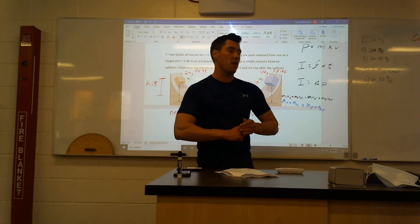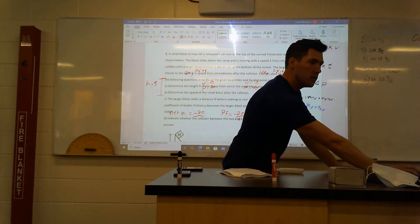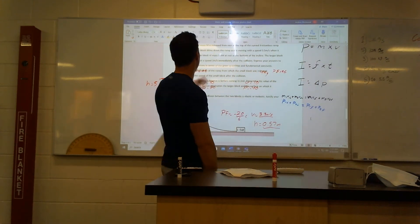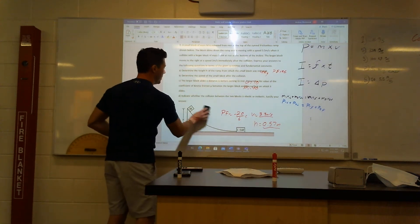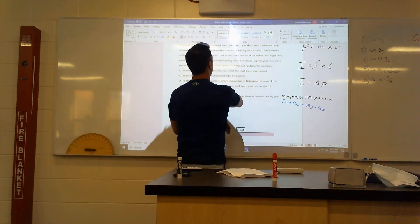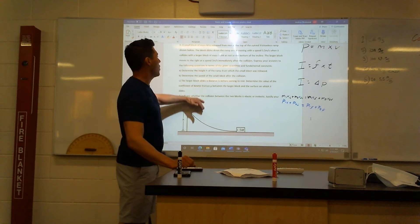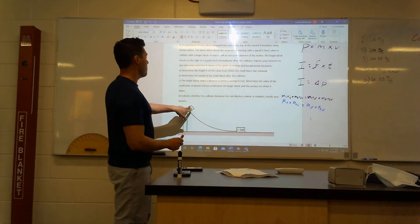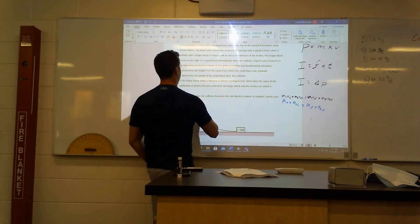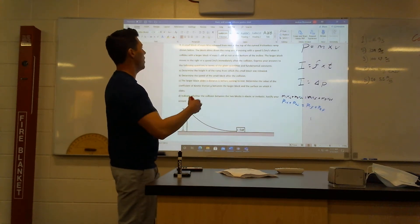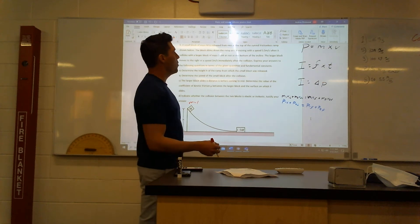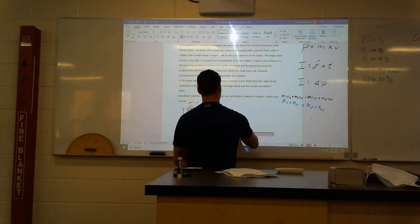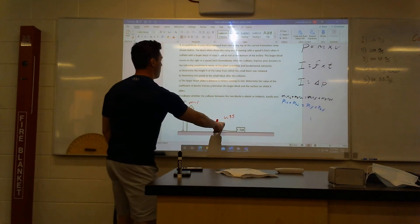That's question 7. Now our tough one — question 8. A small block of mass 1 kilogram is at the top of a curved ramp. The block slides down the ramp and is moving at 3.5 meters per second when it collides at the bottom. It hits a larger block of mass 1.5 kilograms that was at rest. After the collision, the larger block moves to the right at a speed of 2 meters per second.